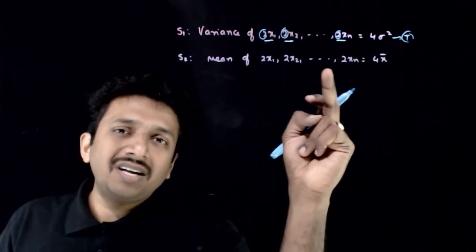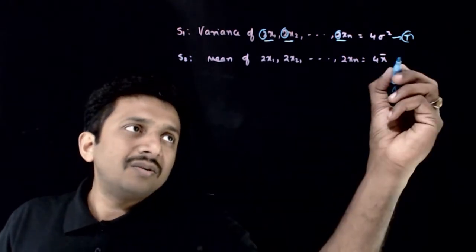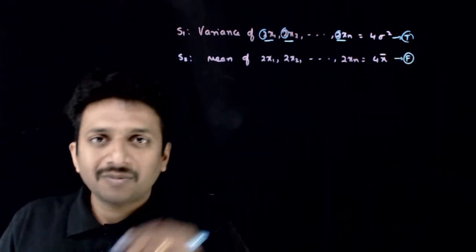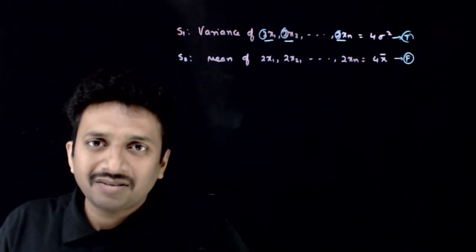If I multiply each of these readings by 2, the mean becomes 2x̄, not 4x̄. So this statement is false. The first statement is true; the next statement is false. Thank you.